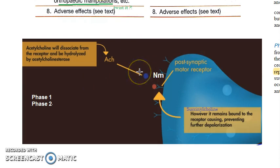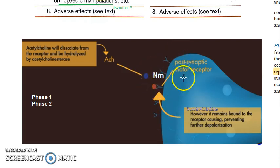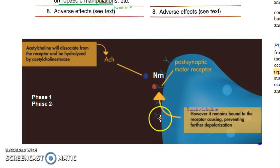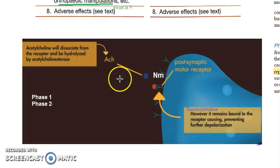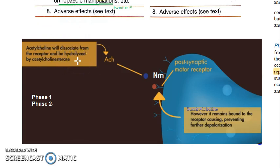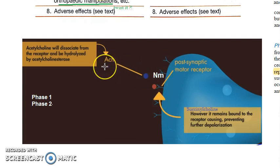Looking at the diagram for the physiology of skeletal muscle contraction: acetylcholine comes and binds to the NM nicotinic receptor, then it depolarizes the membrane and there will be an end-plate potential — the muscle will contract. The neuromuscular junction will get repolarized and be ready for the next acetylcholine. This acetylcholine will bind, get released, and be destroyed by acetylcholinesterase. This is the normal physiology.